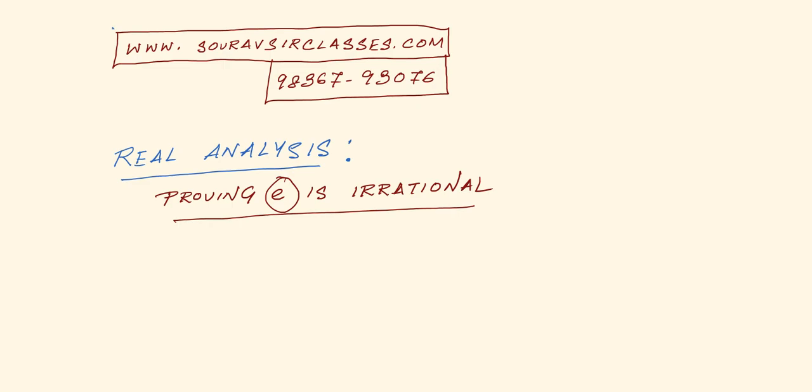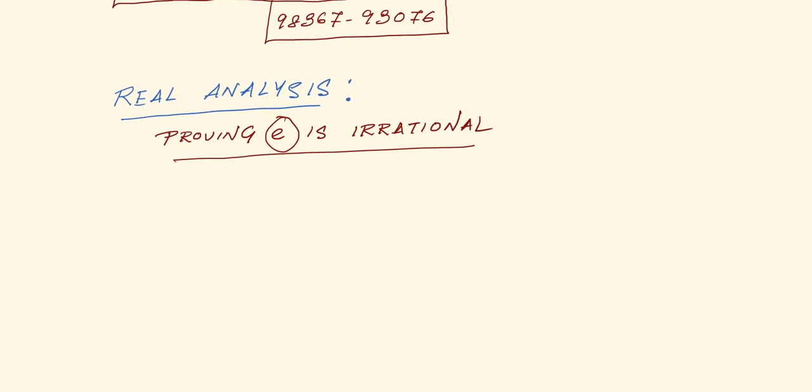Now we have all dealt with the number e and we all know that it's irrational, but how do you prove that e is in fact irrational? So we will prove it by considering: e equals the summation from n equals 0 to infinity of 1 by n factorial. This is what is e.